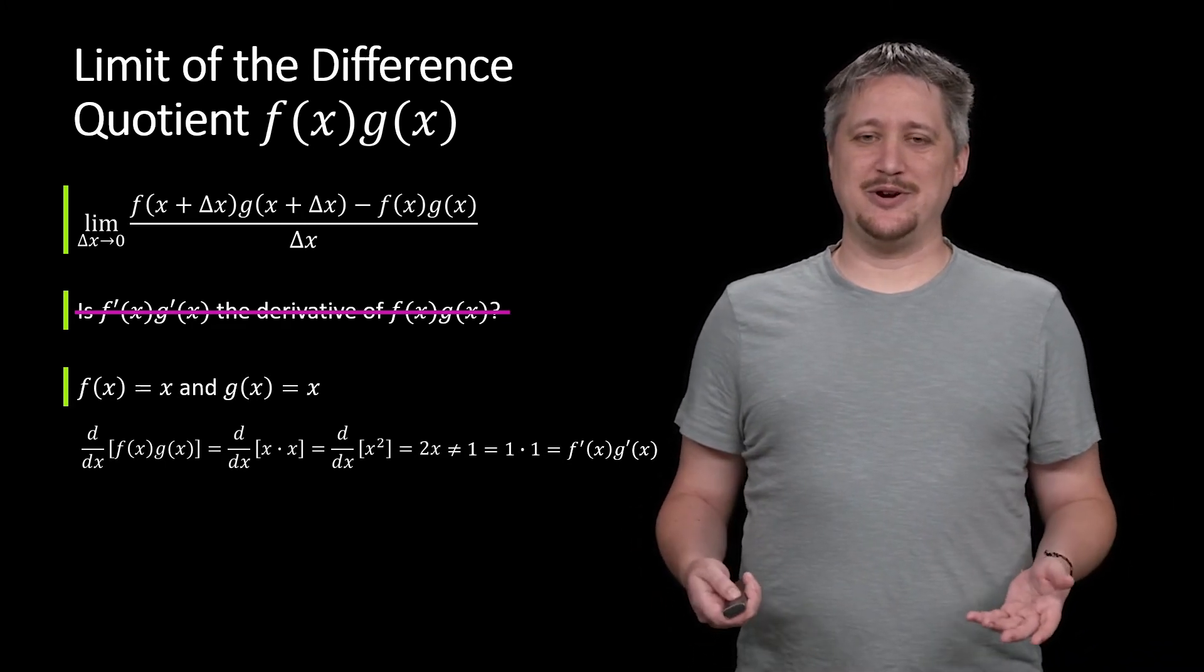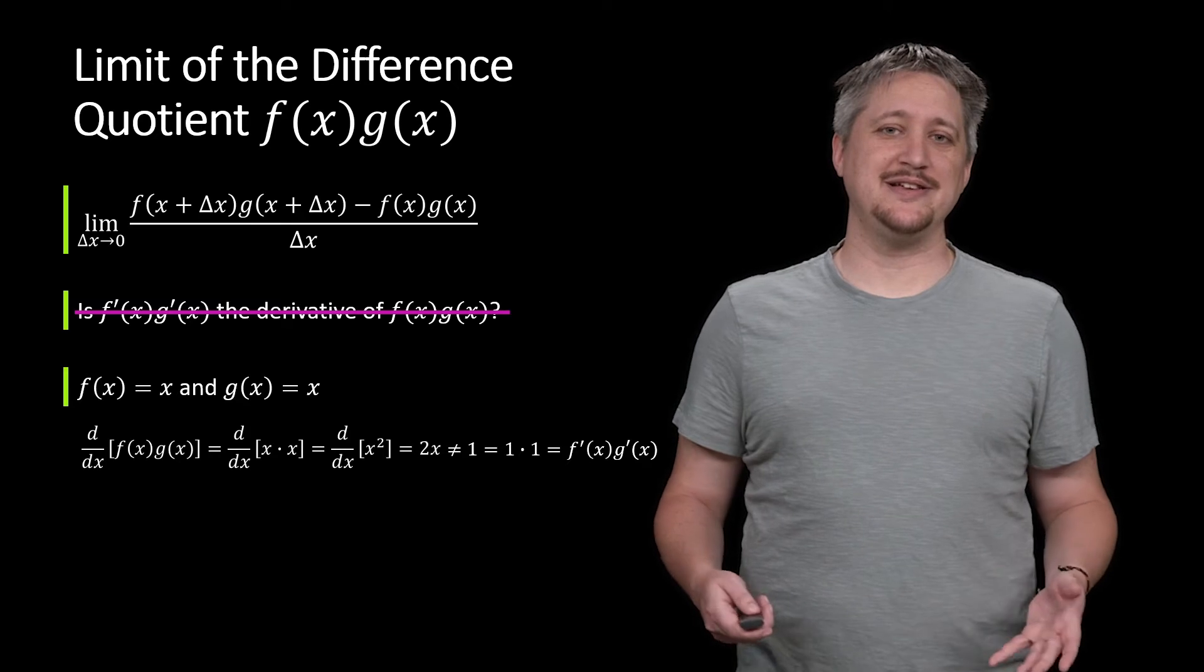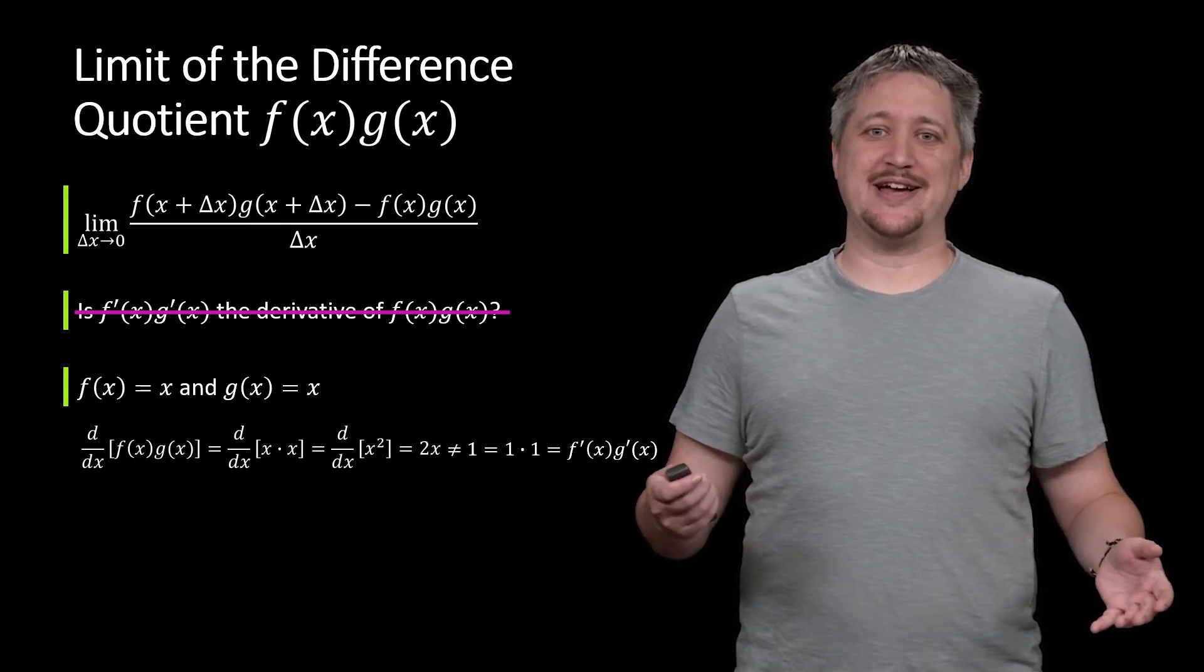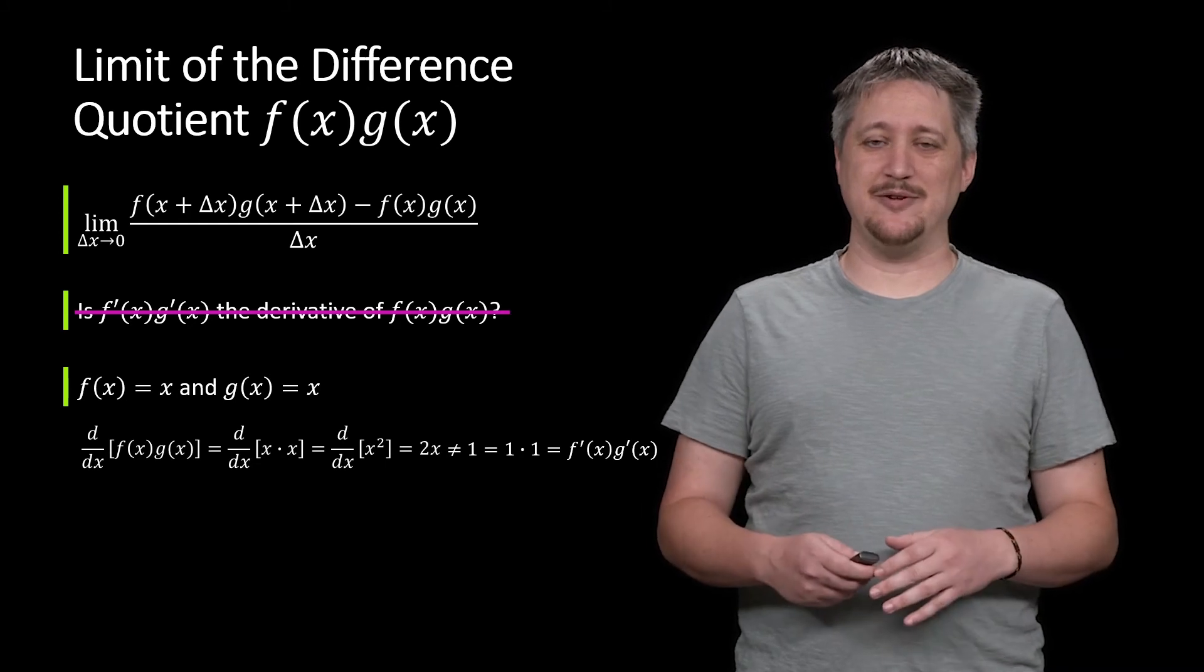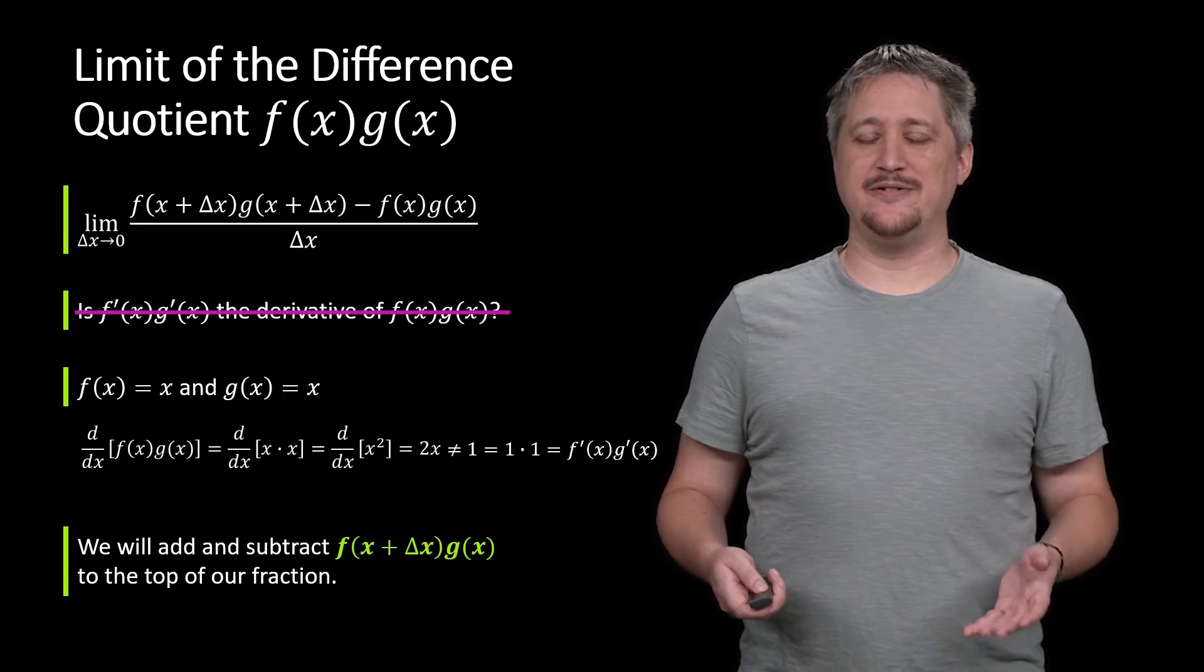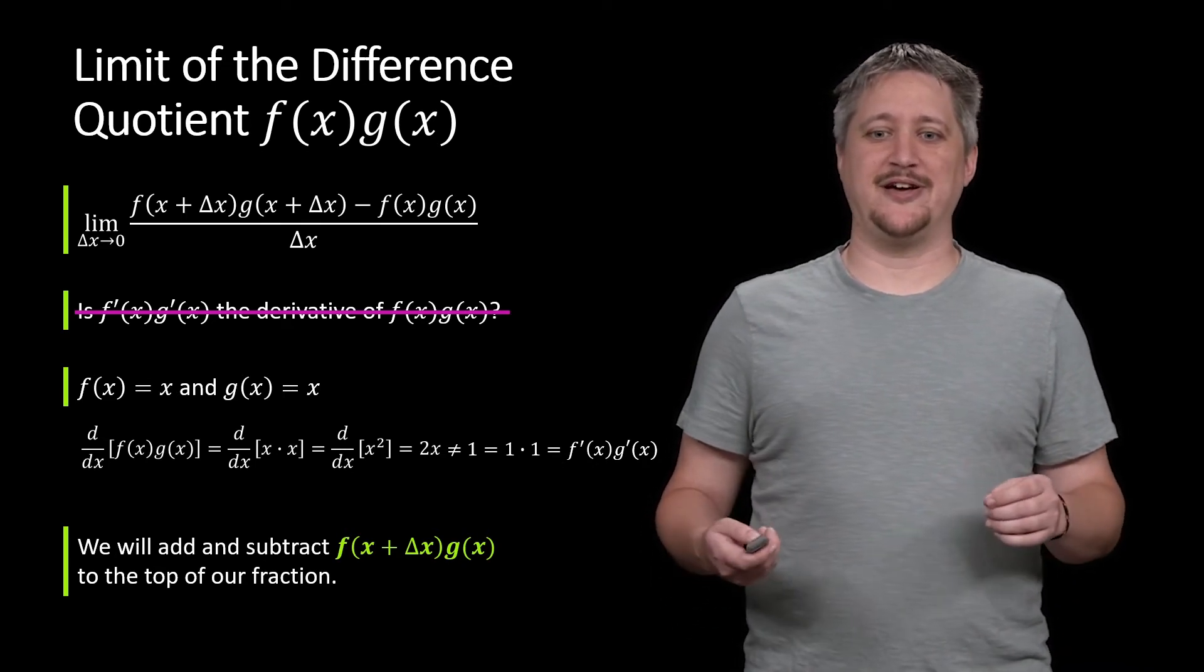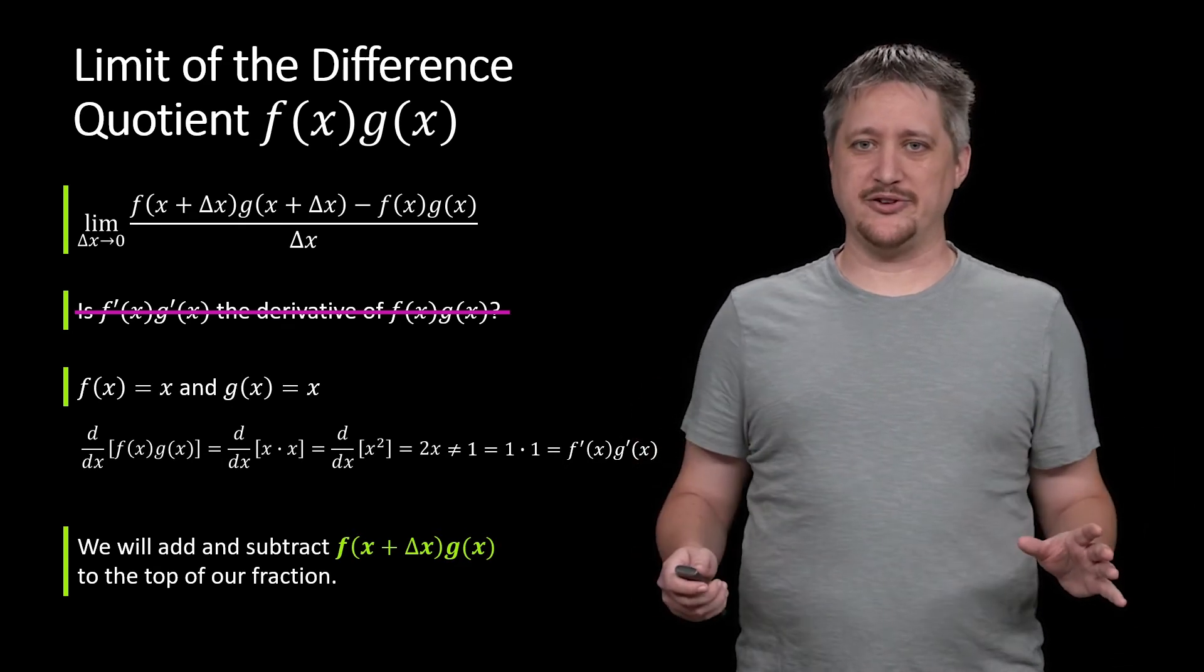So here's where we need to do this adding 0 cleverly bit. This is one of those magic, taking a rabbit out of a hat moments that seems to come out of absolutely nowhere. We're going to add and subtract f(x + Δx) times g(x) to the top of our overall difference quotient.